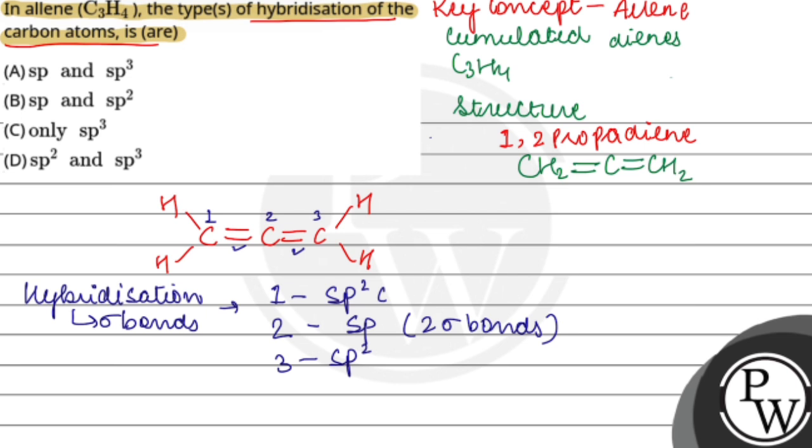According to the options, option B, that is sp and sp2, is the right answer. This was the concept of this question. Hope you understood it well, best of luck.